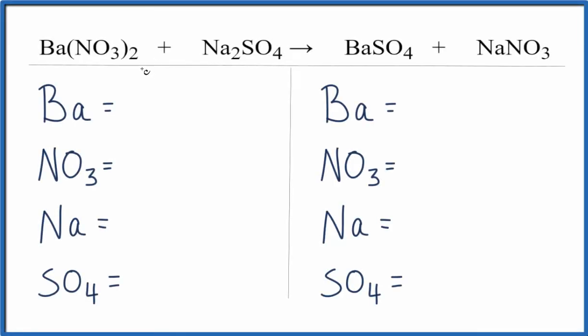So over on the reactant side, we have the one barium. And then you'll notice that this NO3 here, I'm counting it as one thing. It's the nitrate ion. And if we have a nitrate ion, an NO3 here and over on this side, it's often easier just to count it as one item. So I have the one nitrate here and this two applies to everything in the parentheses. So one times two, I have two nitrate ions.